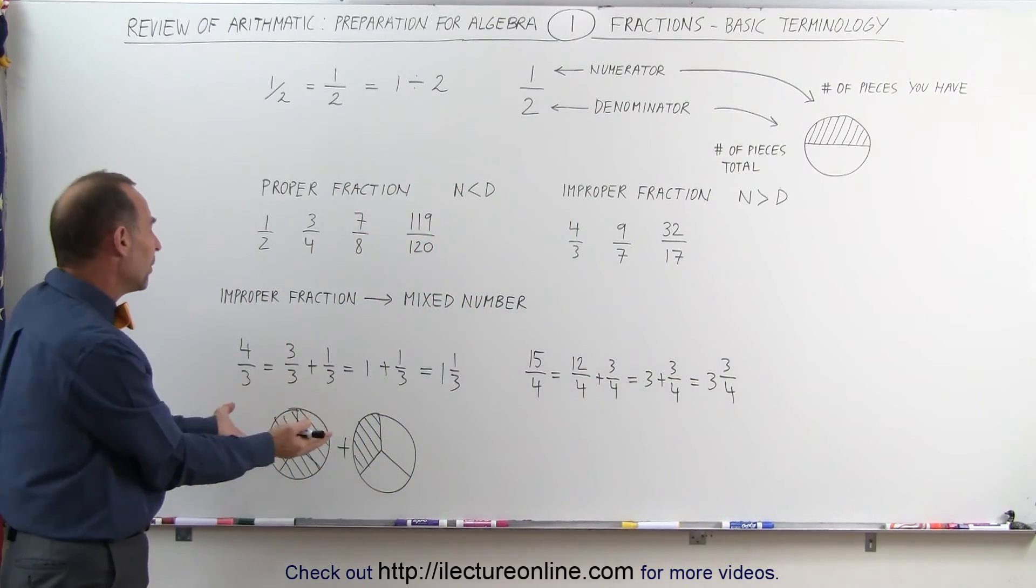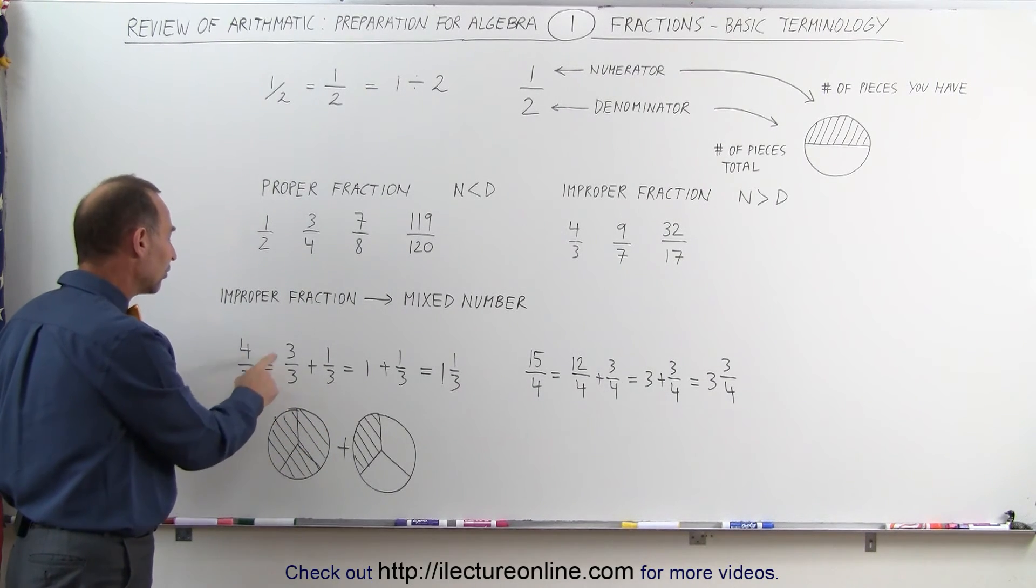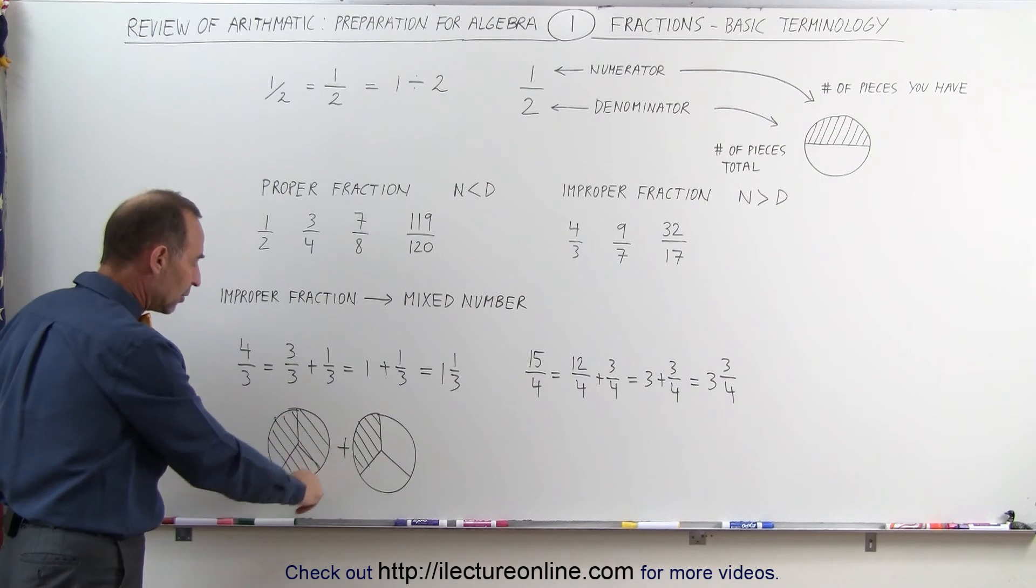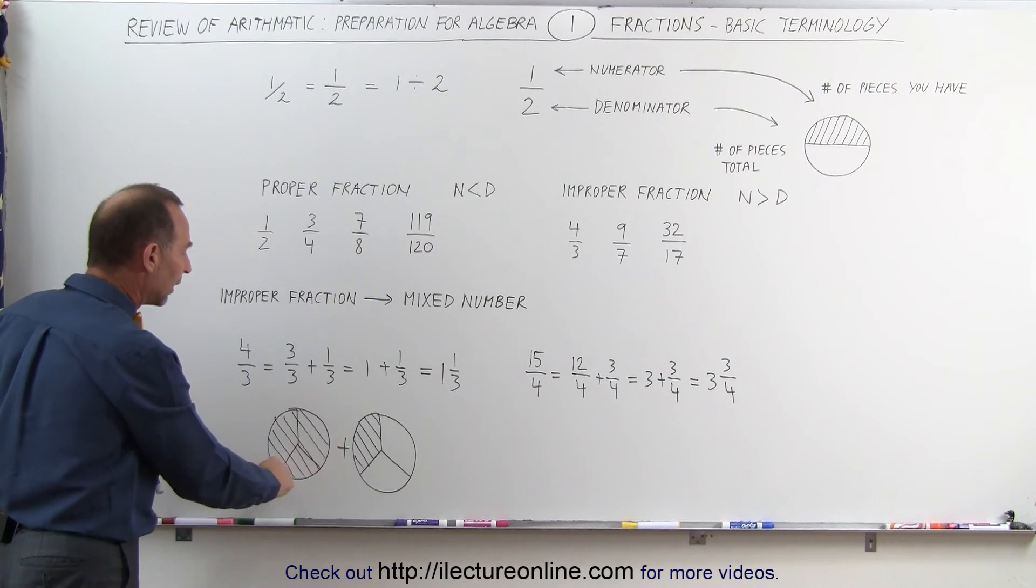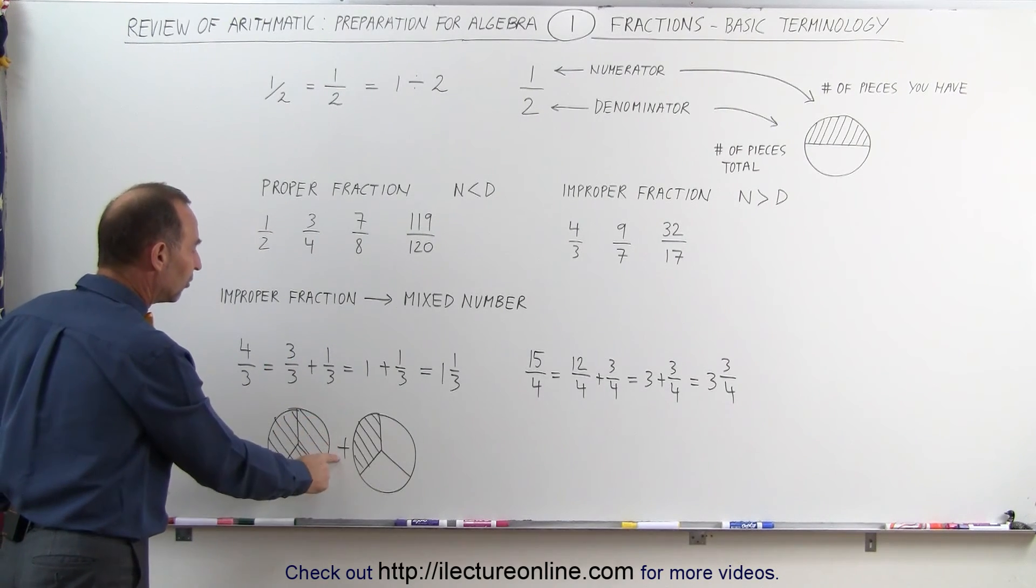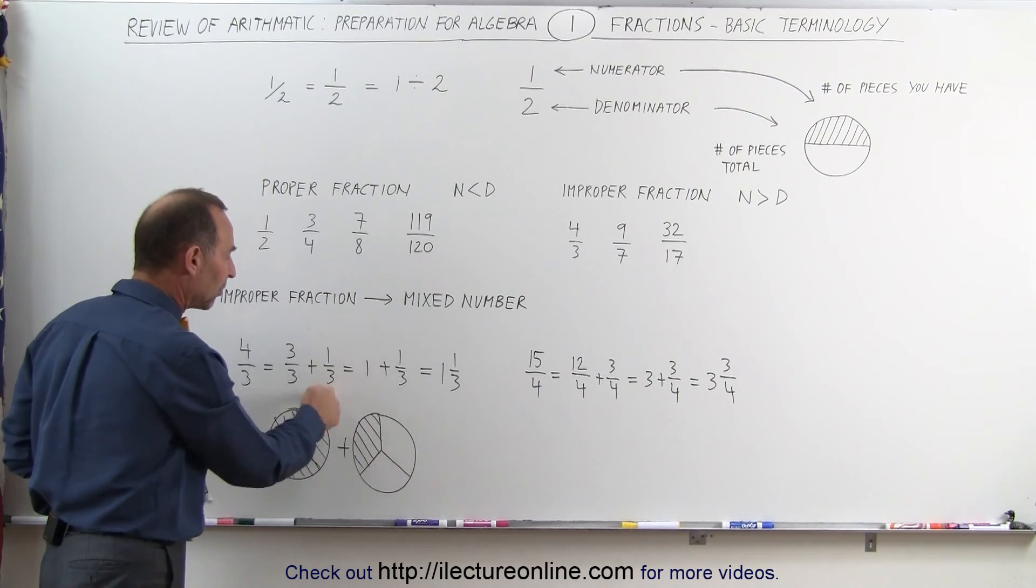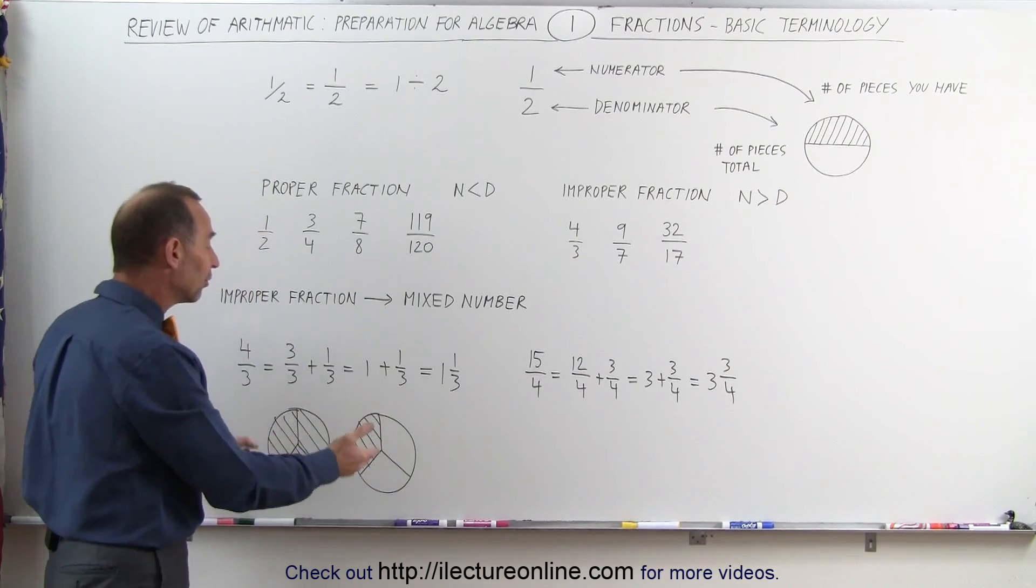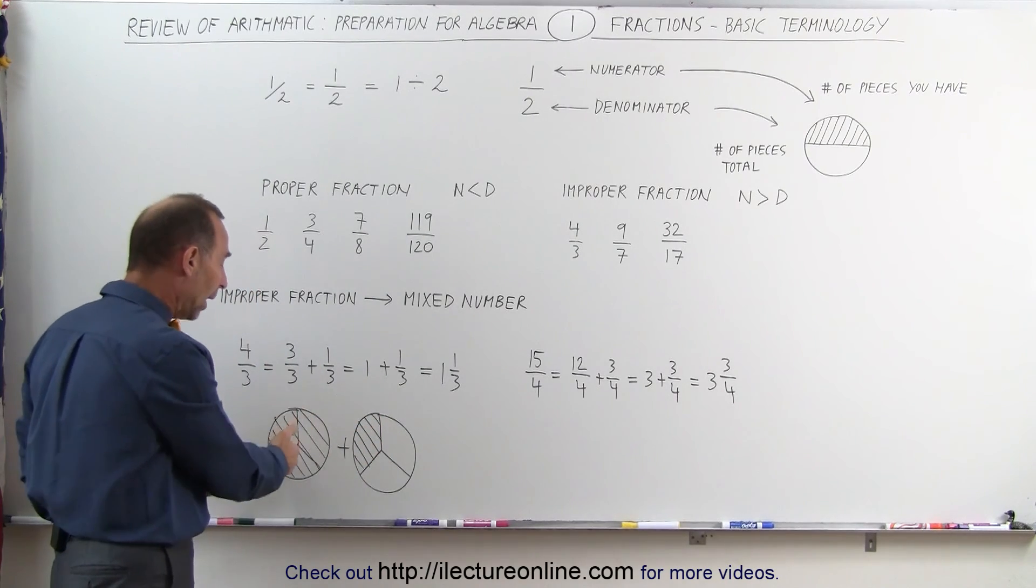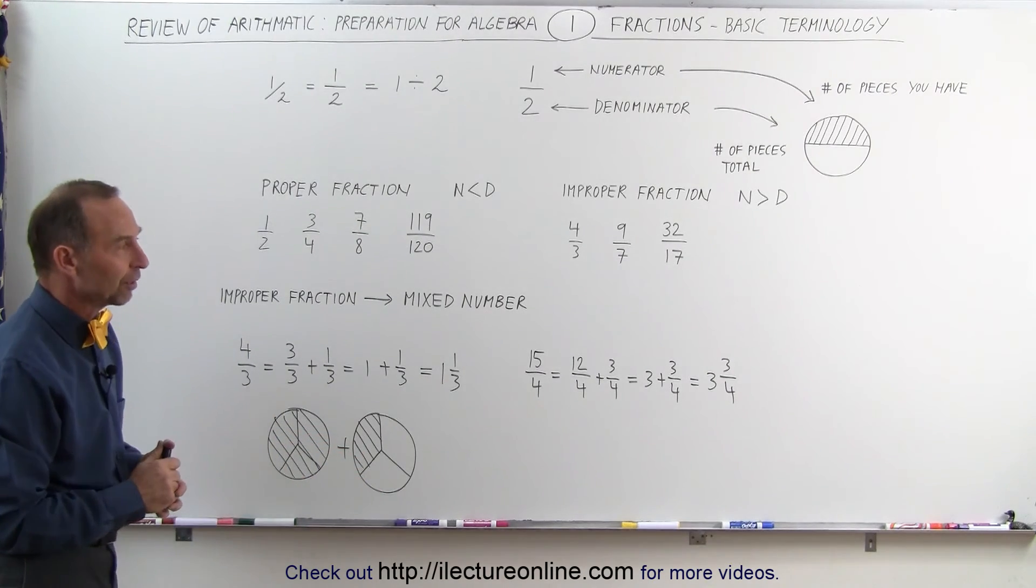If we want to visually represent what an improper fraction is, notice 4 thirds can be written as 3 thirds plus 1 third. Here you have a circle that's divided into three parts, and we have all three of these parts—we have the whole thing, 3 divided by 3. Plus here we have another circle that has three parts, but we only have one of those three parts that represents 1 third. So 3 thirds plus 1 third gives us 4 thirds, or 1 and a third. That's the visual representation of what a mixed number is.